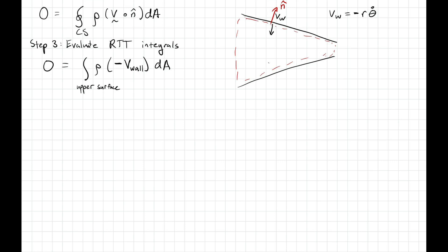As an aside, the wall itself has a velocity that is locally equal to minus R theta dot, where R is the distance, basically the radial distance from the right.